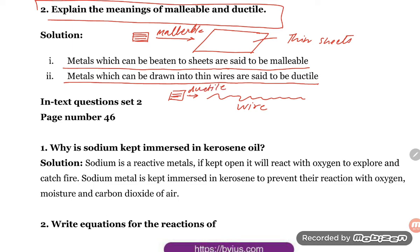So malleable means you are converting the metal into a thin sheet by hammering it. And ductile means you are drawing the metal into a thin wire.